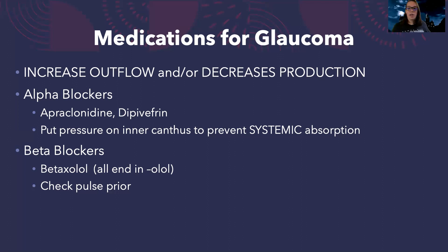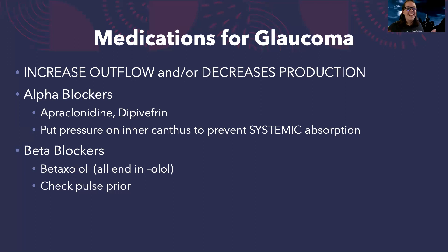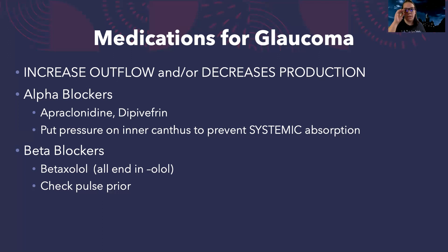You don't need to know in depth which one does the outflow or the production. Just know in general that's what these medications are going to do. There are some common ones — here are the big ones I would want to be familiar with if I was taking care of a patient with glaucoma. First, alpha blockers. That sounds familiar — we talked about clonidine, and look at this first medication, apoclonidine. So yeah, it's just like alpha blockers from your cardiac section, but these are eye drops. These shouldn't be systemically absorbed. To prevent that, tell the patient to put pressure on the inside of their eye when they take these drops to prevent systemic absorption, because you don't want them to have those cardiovascular side effects.